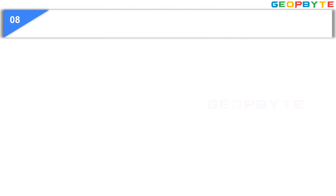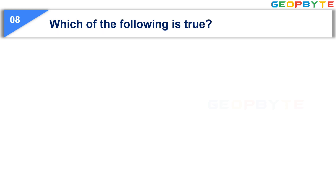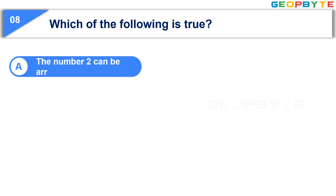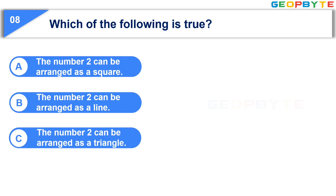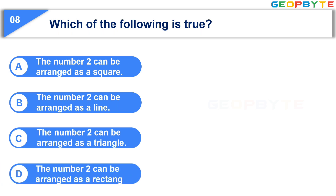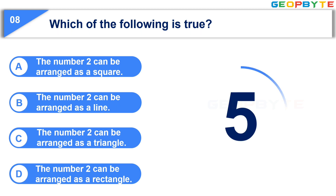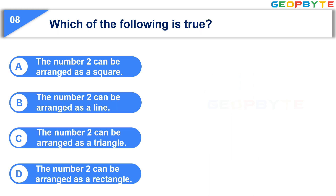Moving to the 8th question: Which of the following is true? Option A: The number 2 can be arranged as a square. Option B: The number 2 can be arranged as a triangle. Option D: The number 2 can be arranged as a rectangle. Your time starts now. Your time is up and the correct answer is Option B, the number 2 can be arranged as a line.